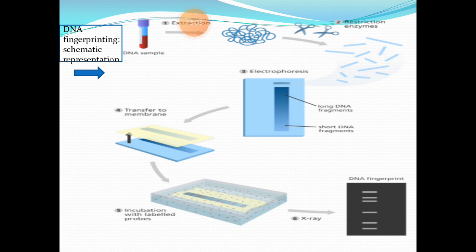The same thing is transferred to a nitrocellulose (NC) membrane for Southern blot. The bands are transferred position-by-position from the gel to the NC paper. Then the nitrocellulose paper is incubated with labeled probes in the fifth step for Southern hybridization. After hybridization, extra probes are washed off, and the result is exposed to an X-ray film — you will get a banding pattern representing the DNA profile.